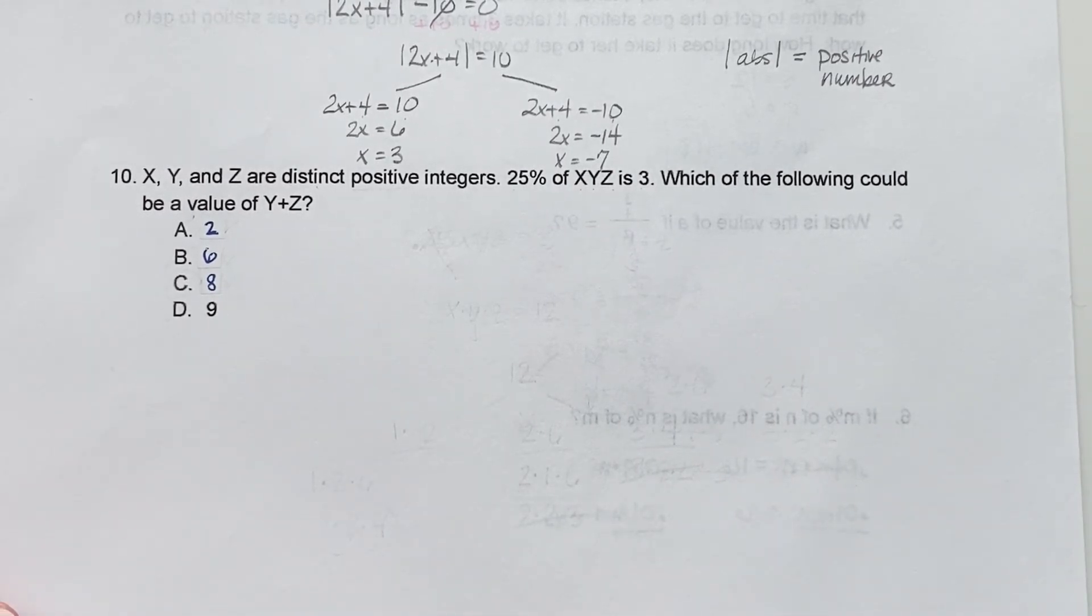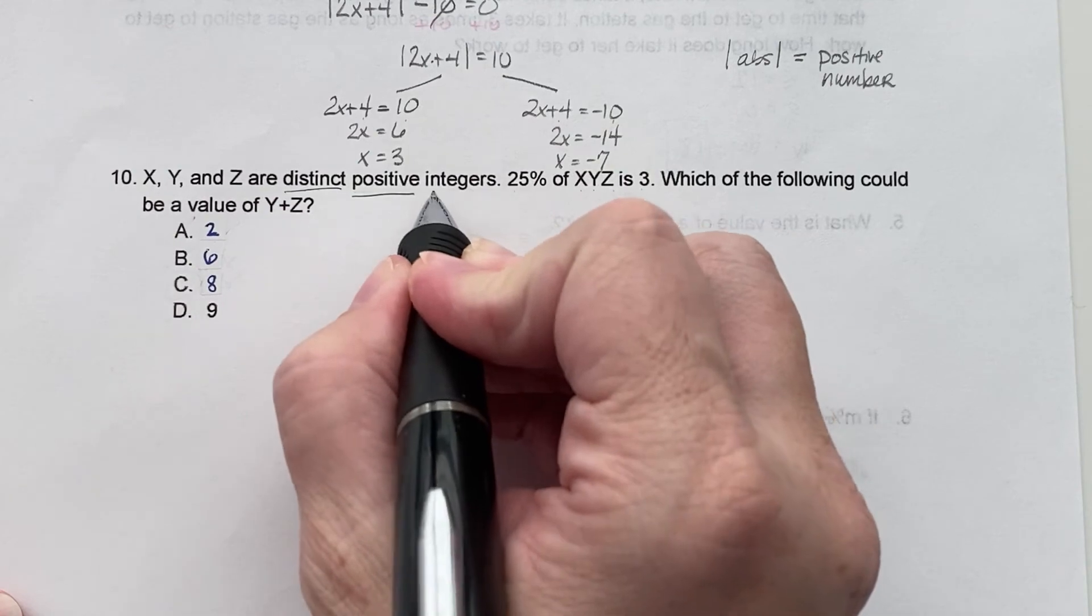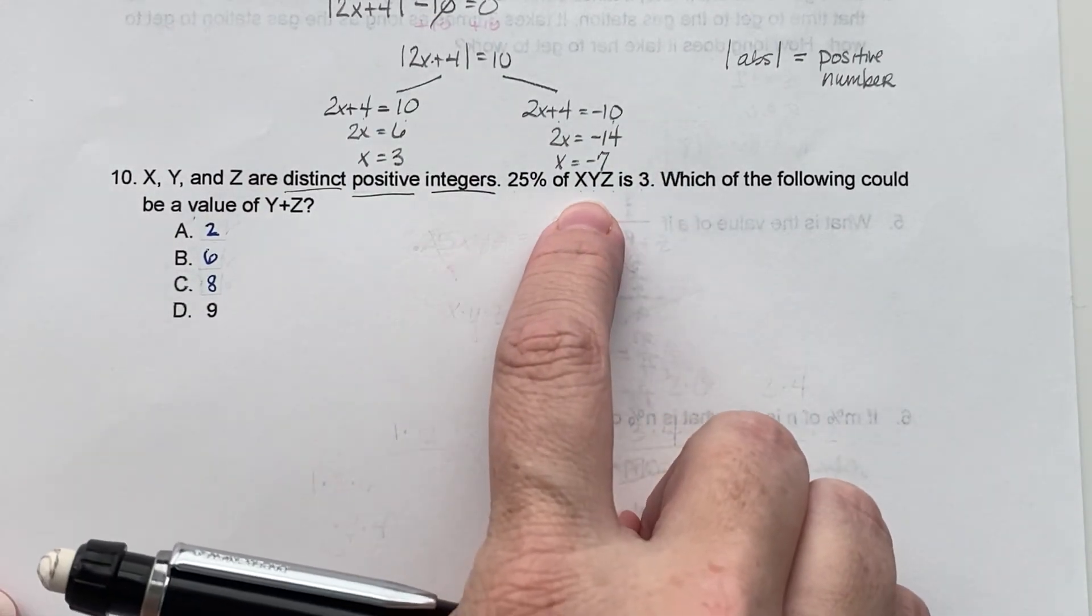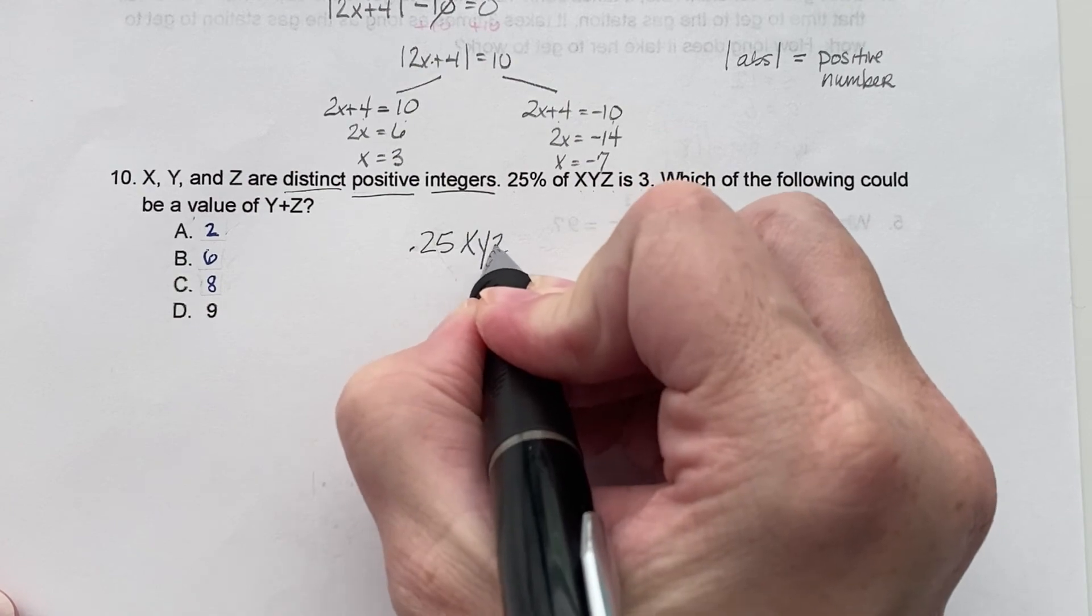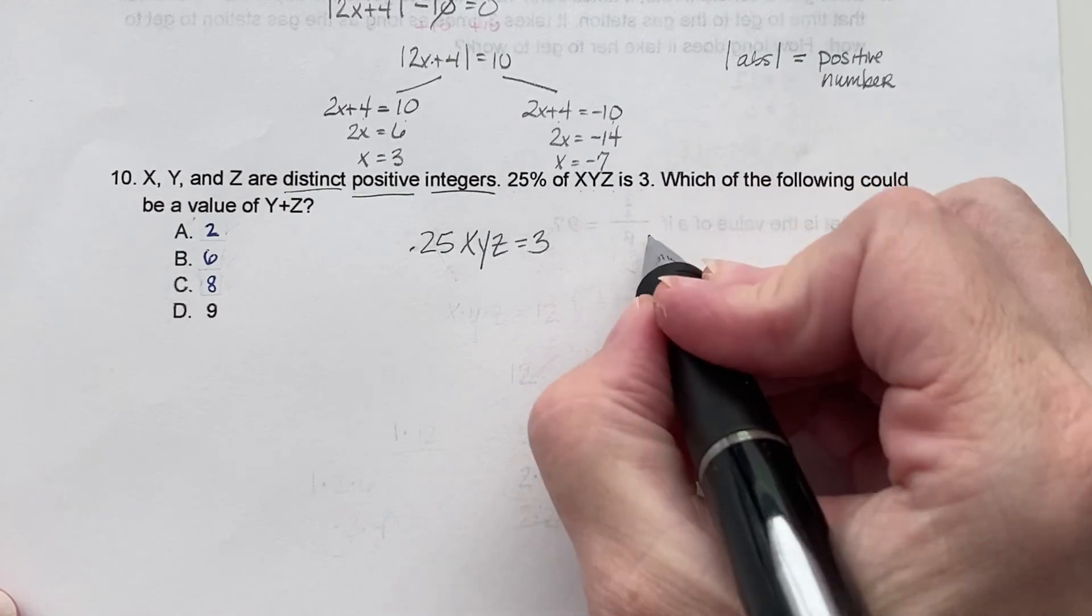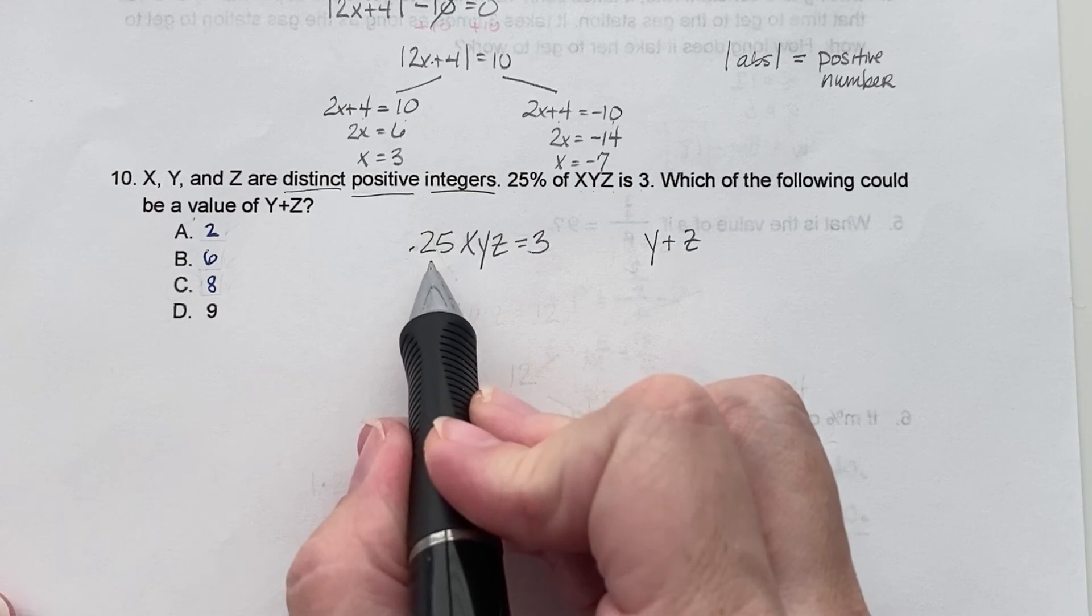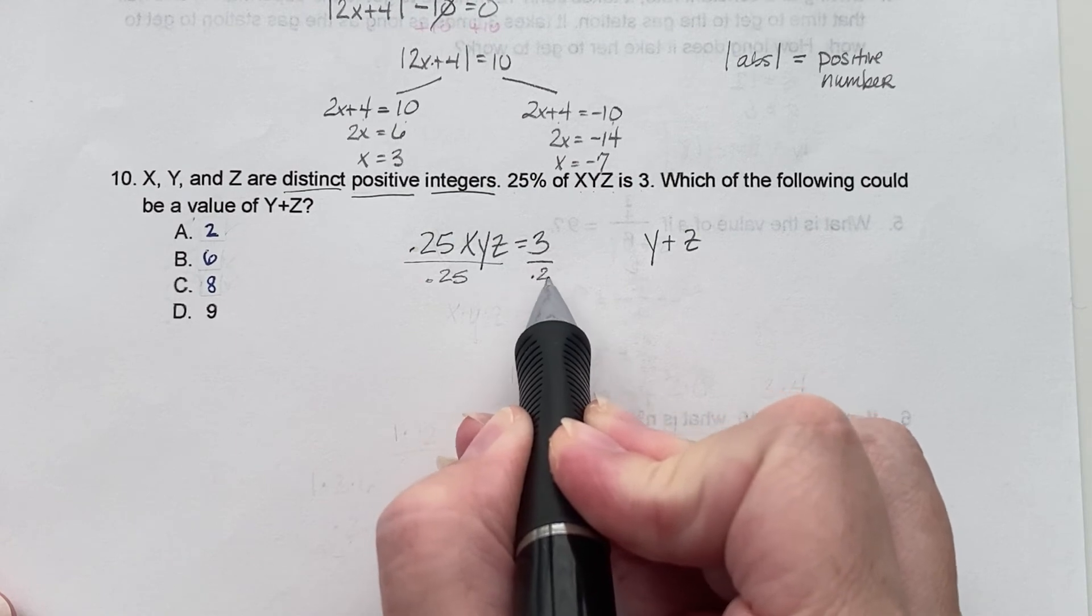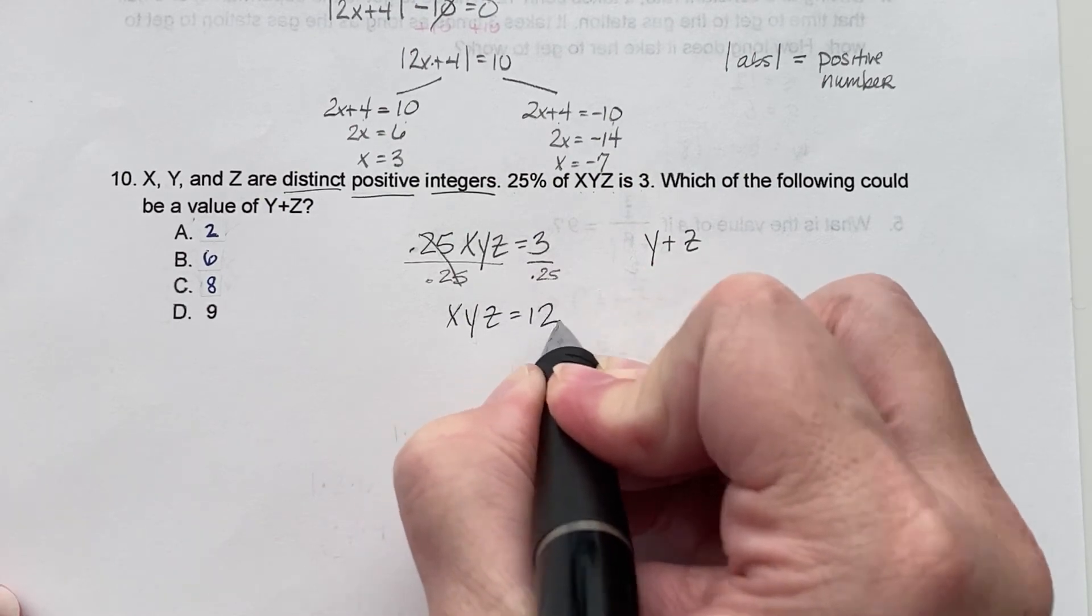So x, y and z are distinct positive integers. So distinct meaning they don't repeat, obviously positive integers, no fractions. So 25% of x, y, z is 3. So 0.25 times x times y times z equals 3. So which of the following could be a value of y plus z? So first what we're going to do is divide everything by 0.25, which will give us 12.